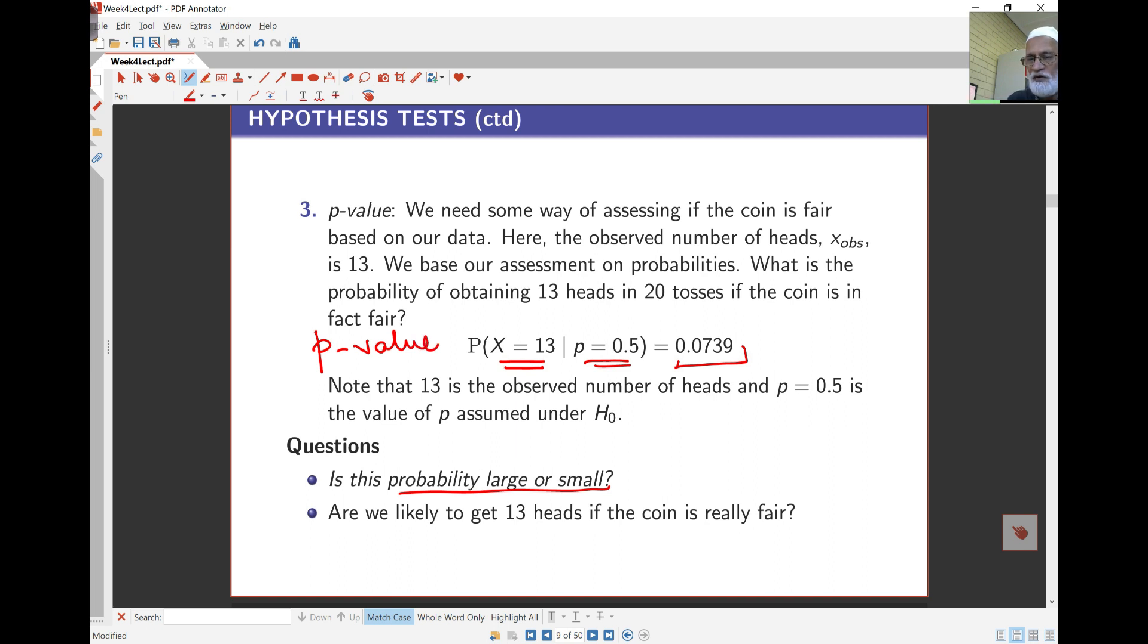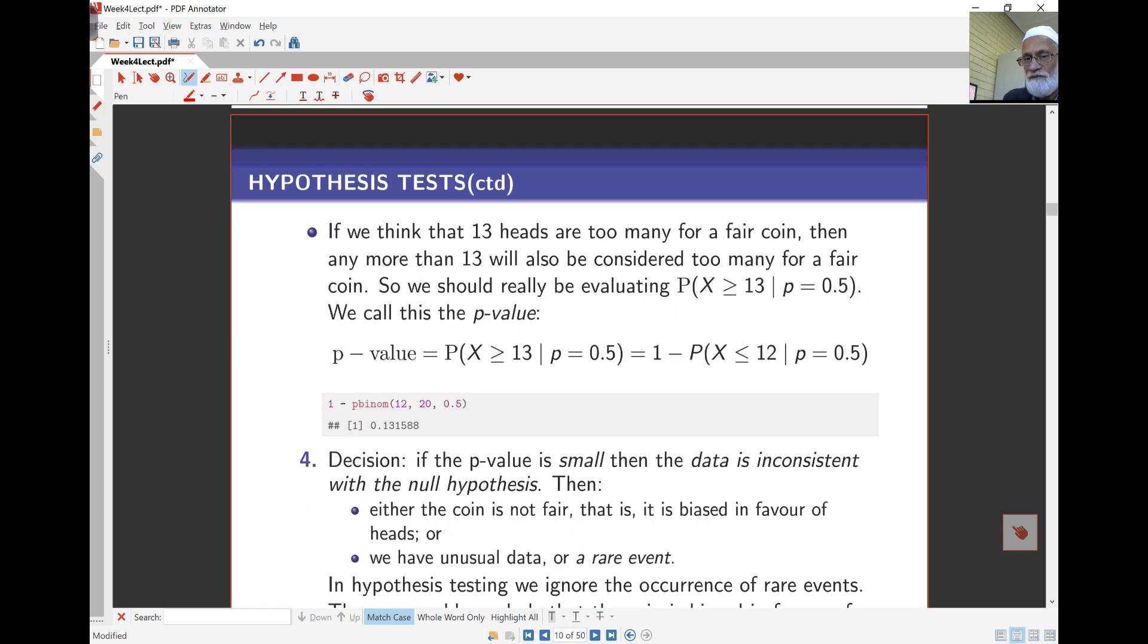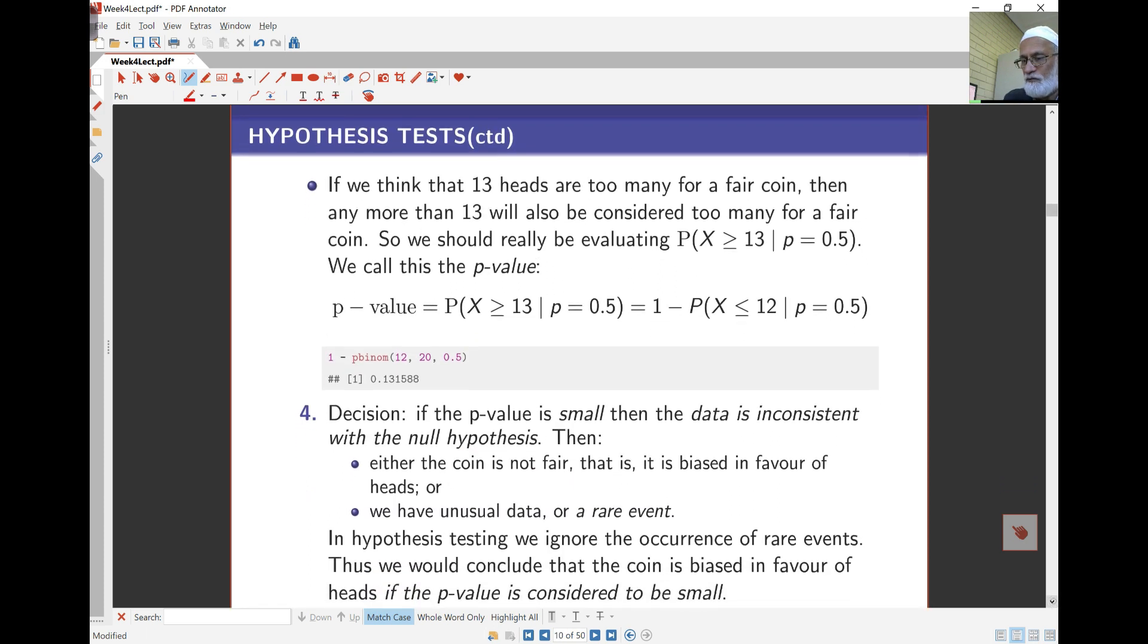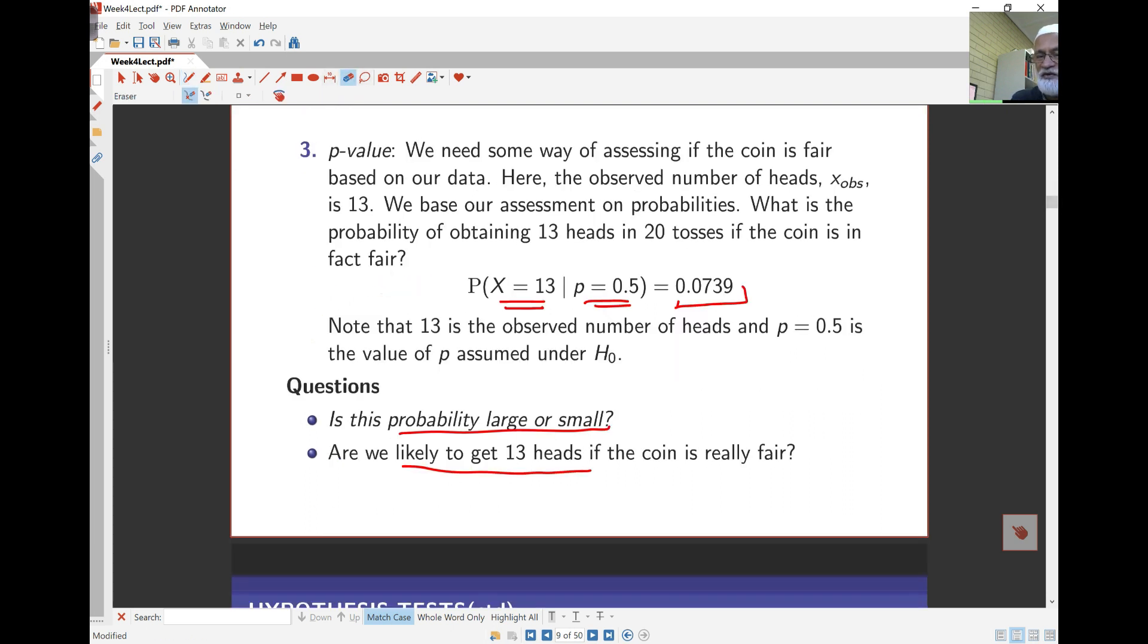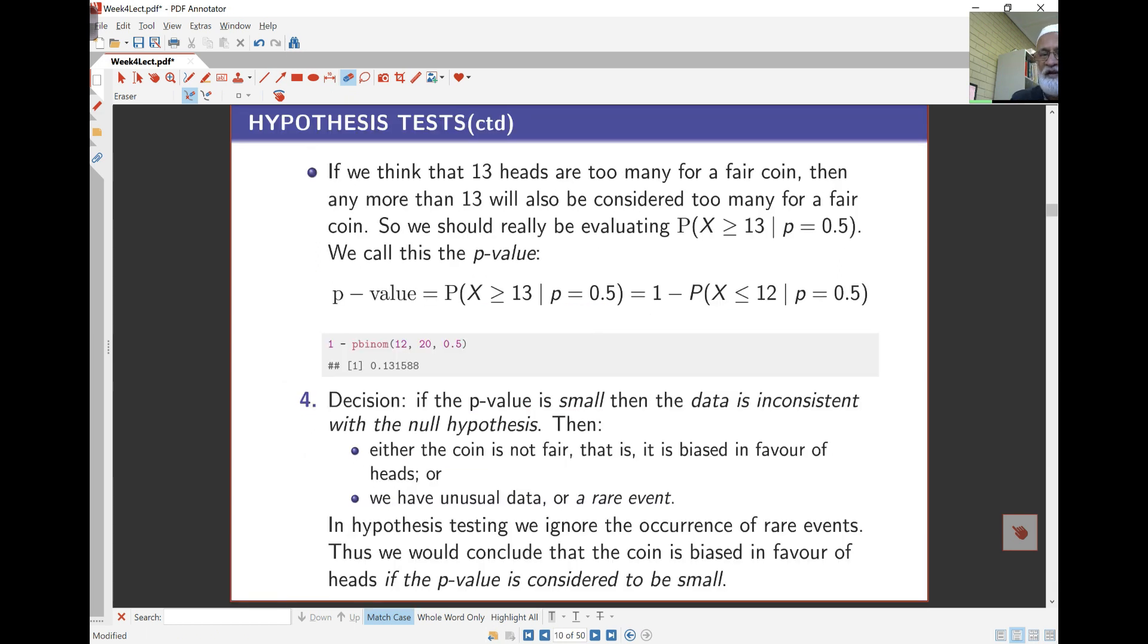Now notice one thing here. So far I've just looked at probability of X equals 13, that's a single observation. Now, on the basis of this, whether this probability or P-value is large or small, I can decide am I likely to get 13 heads if the coin is really fair? From a fair coin, am I likely to get 13 heads? Well, if you think 13 heads are too many for a fair coin, then anything more than 13 heads is also too many. So I'll go back and rub this out. This isn't quite my P-value. My P-value actually is going to be a statement that looks like this: probability of X bigger than or equal to 13, what I observed and more extreme than that, assuming null hypothesis.